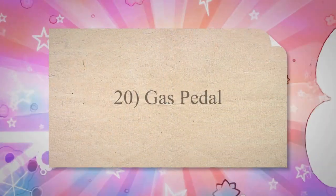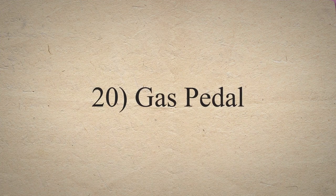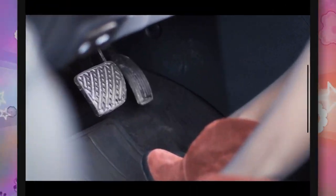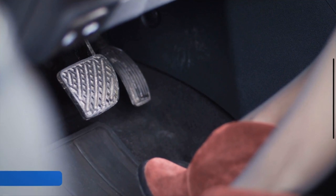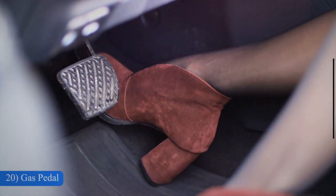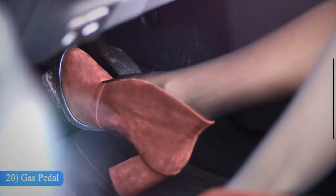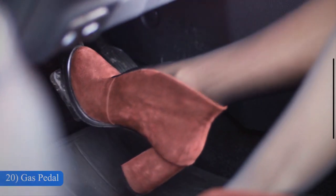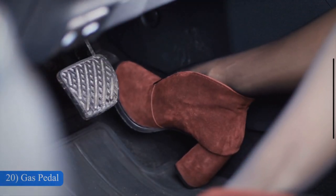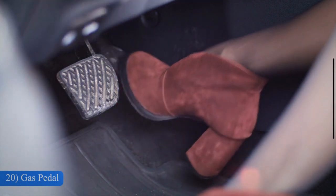20. Gas Pedal. The gas pedal is also called the accelerator pedal. You can find it on the right side of your car floor. The main purpose of the gas pedal is to control the amount of gas fed to the engine, which handles the car's speed. As your car accelerates, slowly press the gas pedal.